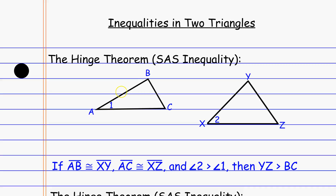If I have something like AB being congruent to XY — so these two pieces are congruent — and AC is congruent to XZ, I have these two pieces congruent. And then the angle in between, which is like the hinge, if those angles are not congruent and one is bigger than the other — in this case angle two is bigger than angle one — then the side across from those angles has the same relationship. In other words, BC has to be smaller than XY. That's what the hinge theorem says.